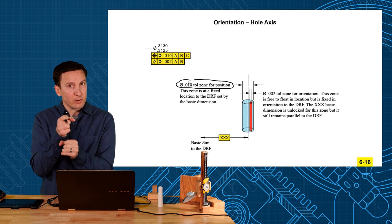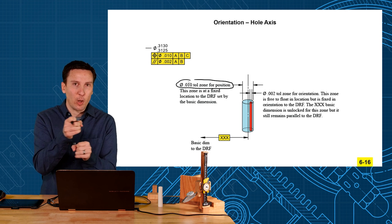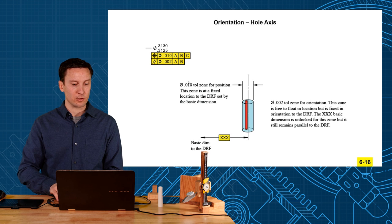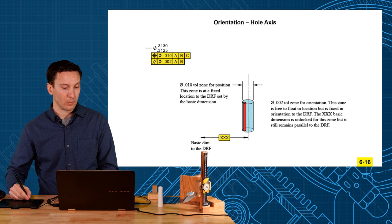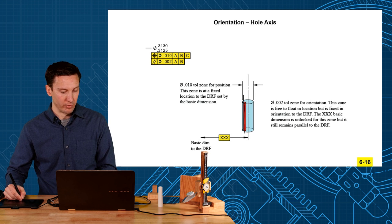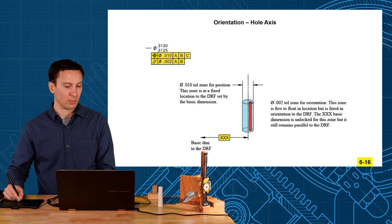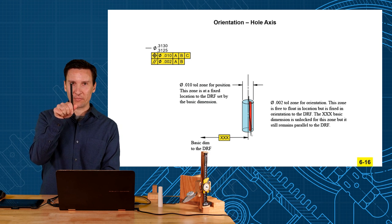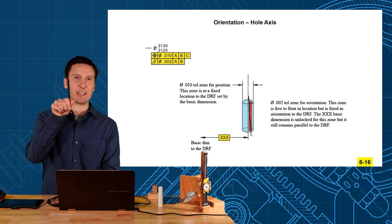Then the parallelism is a smaller cylinder that can float inside. So watch it float. Your axis could be over here, it could be over here, or it could be over here. But the axis cannot tilt any more than the 2 thou. So the position controls the location of it and then the parallelism is refining the orientation.